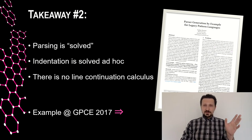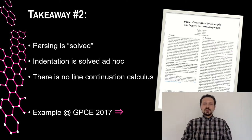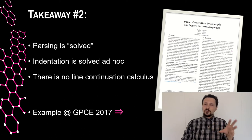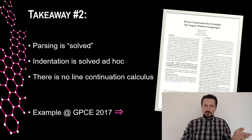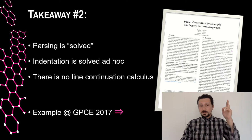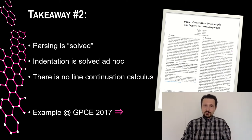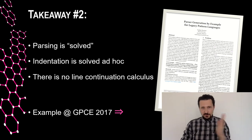Takeaway number two: you might think these problems are tiny and related to parsing, which is considered a solved problem. But indentation and line continuation are usually solved ad hoc — per case, per compiler — with no nice calculus and no parser generator in the world that supports this. As an example, I published a paper explaining why I had to write a new parser generator for a language very based on position within the line.